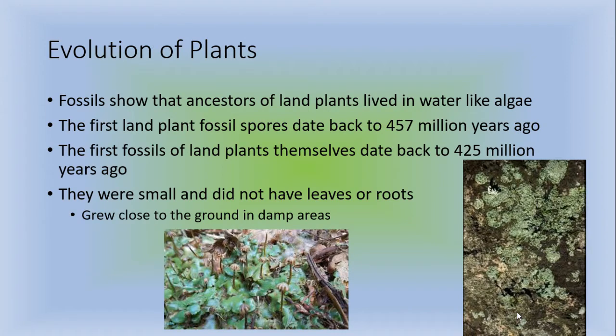Now the evolution of plants. So fossils show that ancestors of land plants lived in water like algae. The first land plant fossil spores date back to 457 million years ago. The first fossils of land plants themselves date back to 425 million years ago. They were small. They did not have leaves or roots. So they grew really close to the ground and they had to be in damp areas. And this is just a picture of some algae. And these were pictures of the very first land plants. You can see how close to the ground they were.